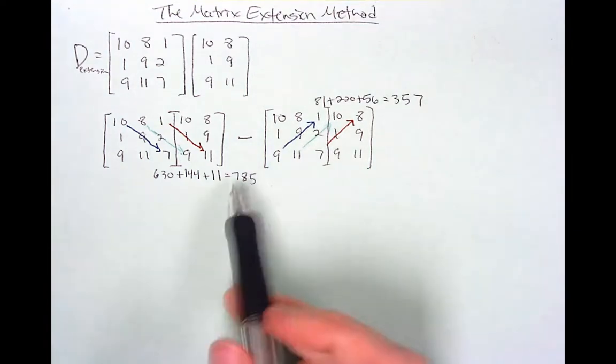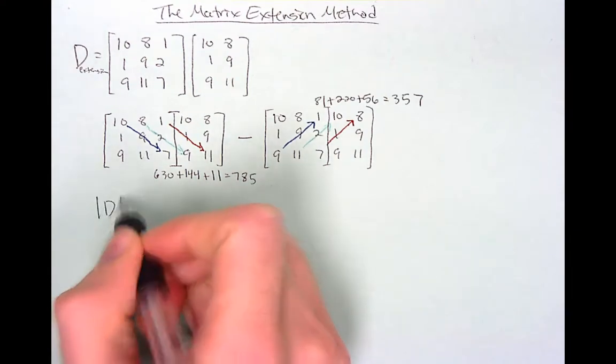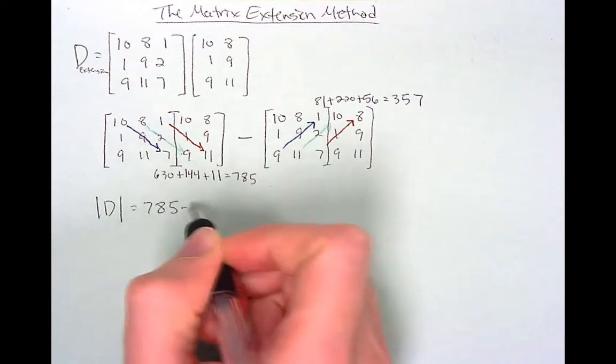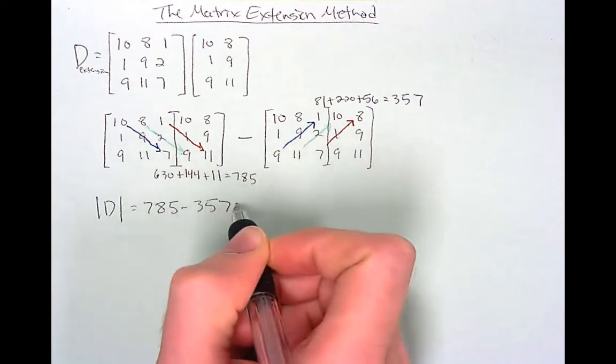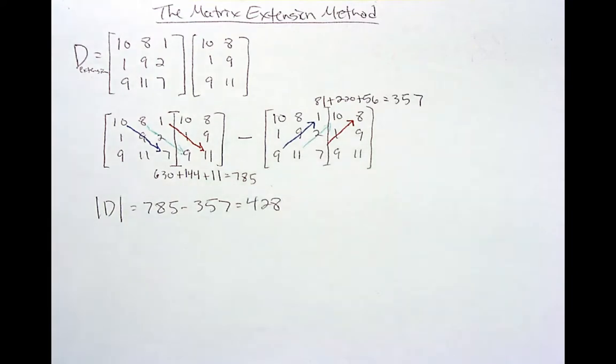So it's going to be this value minus this value. The determinant of D is 785 minus 357 which will equal 428.